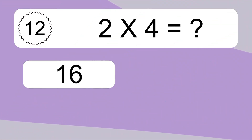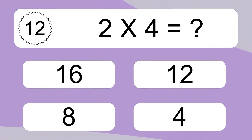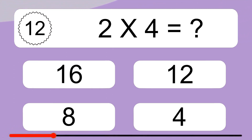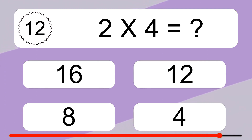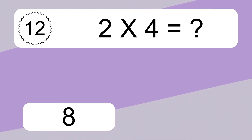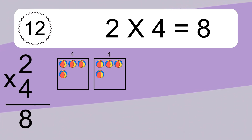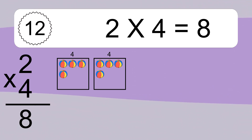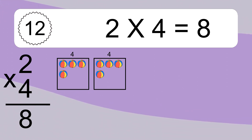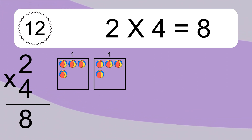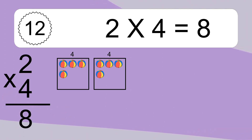2 times 4 equals what? 2 times 4 equals 8. We have 2 boxes, and each box has 4 colorful balls inside. If you count all the balls in all the boxes together, you will have 2 times 4 balls. This equals 8 balls.